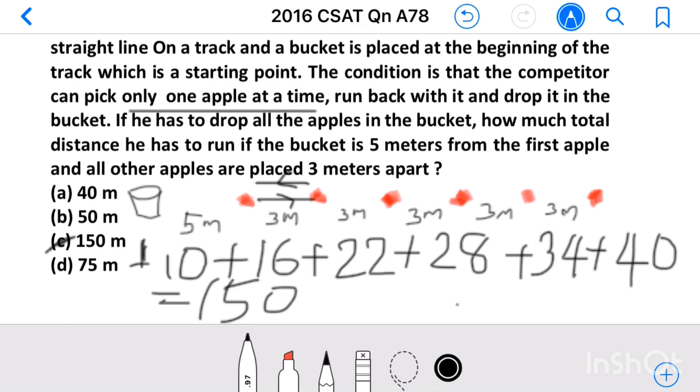Here we can see this is a progression and it has six numbers, six terms. Only six terms we can easily calculate like this by summing all these. If there are 10 terms or 10 apples or 20 apples, then we have to use the equations.